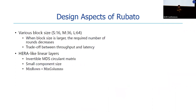Rubato supports three types of block size: small (16 words), medium (36 words), and large (64 words). When the block size is larger, the required number of rounds decreases. So larger block size means larger throughput, and smaller block size implies smaller latency.